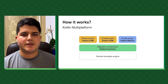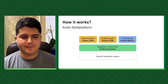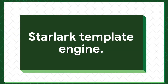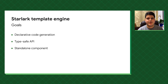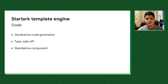Currently, Gradle is already supported while support for Maven and other build systems is being developed. Now let's dive deeper into the Starlark template engine and see how it improves the code generation process for Bazel. It follows three primary goals: first, it must provide declarative code generation, meaning the code describing generation should be as similar as possible to the resulting generated code. Second, it must provide a type-safe API, preventing many errors at the Kotlin compilation stage. Third, it must be available as a standalone component — useful when you only need a lightweight tool for generating Bazel scripts without the full migration logic.